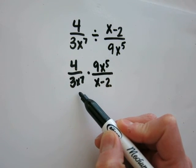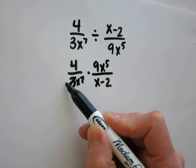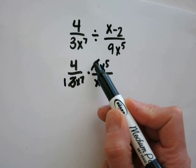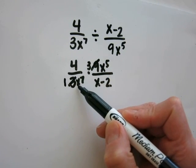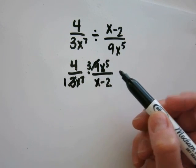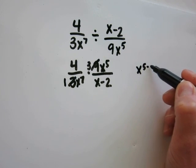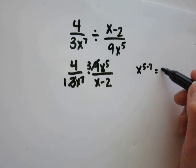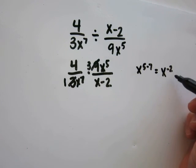Now see what I can simplify. 3 and 9 are both divisible by 3. 3 divided by 3 is 1, and 9 divided by 3 is 3. I have the same base of x here, so I can subtract my exponents. This will be x to the 5th power minus 7, which gives me x to the negative 2nd power.